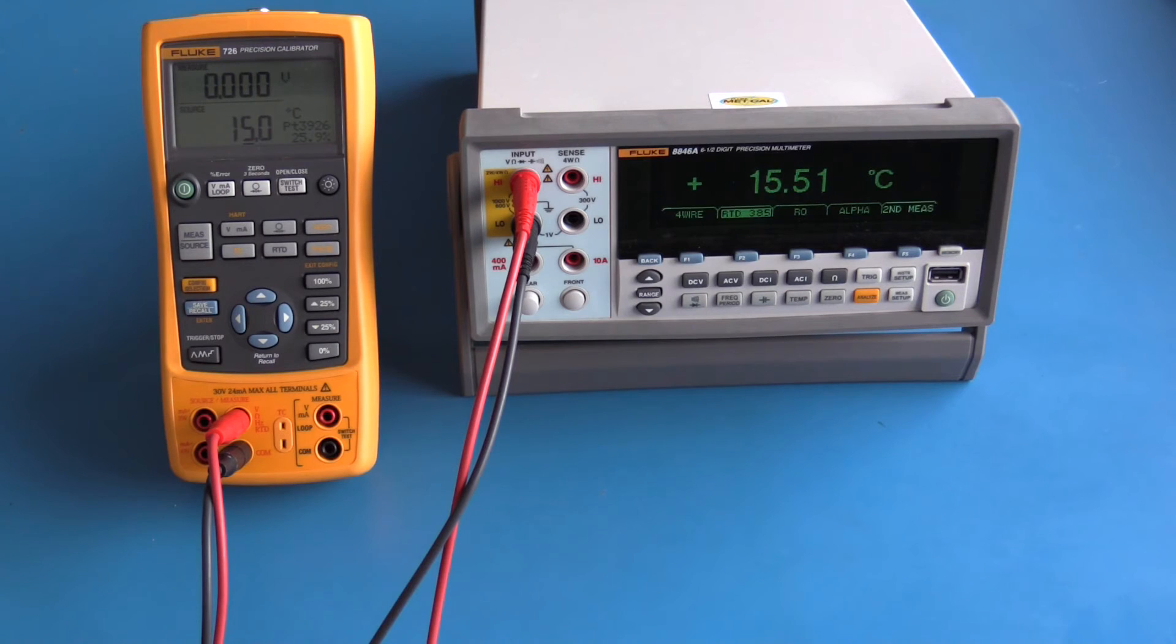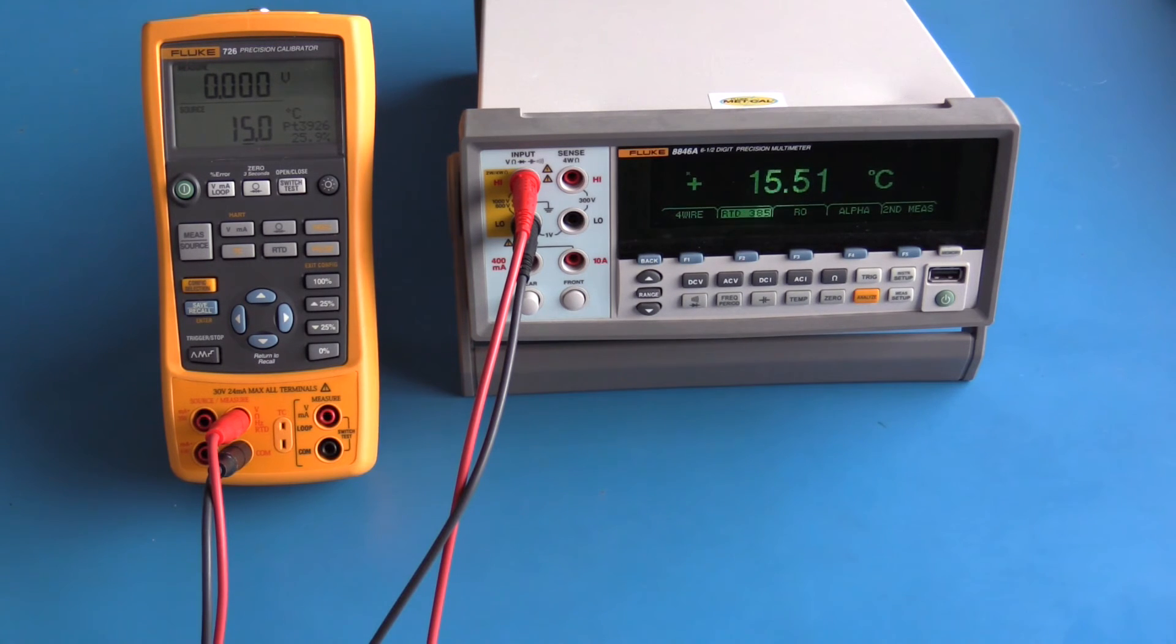The Fluke 726 is also capable of simulating a temperature probe. Here I'm using an RTD and I'm simulating approximately 15 degrees Celsius. There is a slight difference in the type of RTD the Fluke 726 is simulating and the type of RTD the Fluke 8846a is expecting. The Fluke 726 could be set up to simulate the appropriate RTD, I just don't have one set up currently.